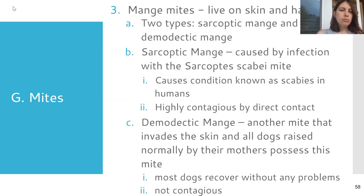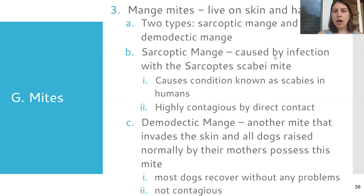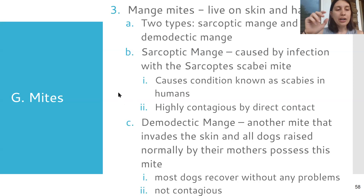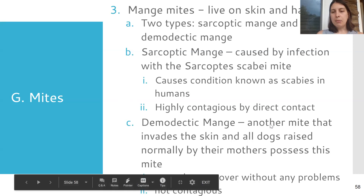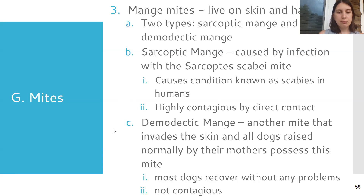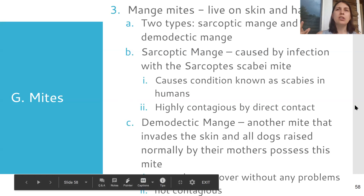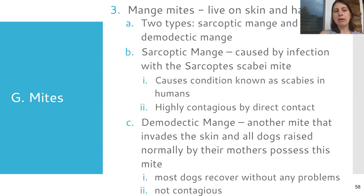Mange mites live on the skin and in the hair coat and can lead to mange. The sarcoptic mite causes sarcoptic mange and can cause scabies — it's very contagious, so just petting an animal with sarcoptic mites can transfer it to you. Demodectic mites are another type that live on the skin but are not very contagious. Typically most animals don't have a serious problem with them — hair doesn't fall out, they're not profusely itching or spreading to other dogs in the household.